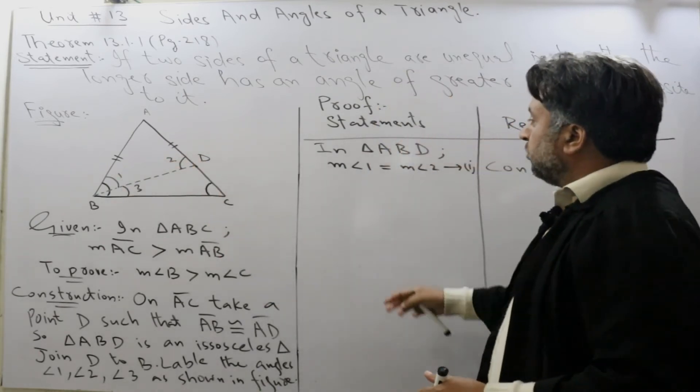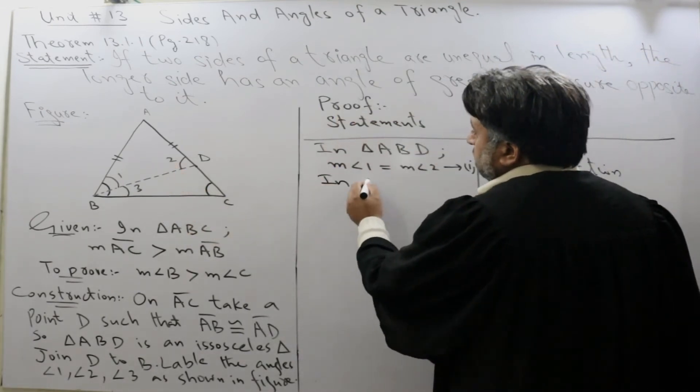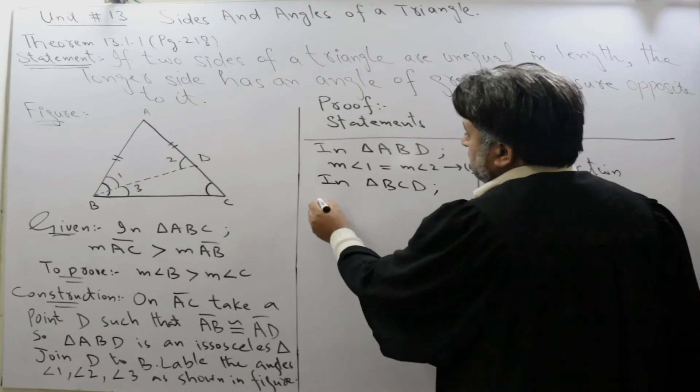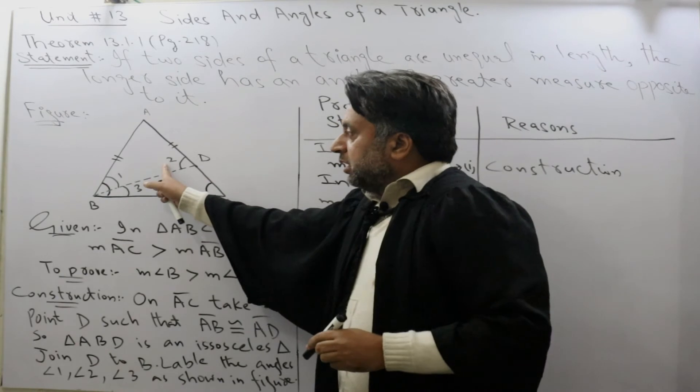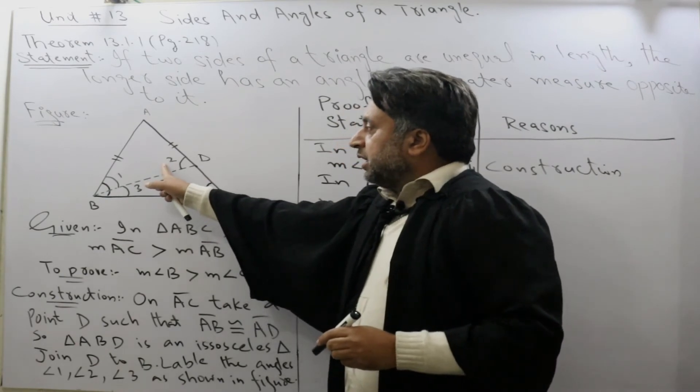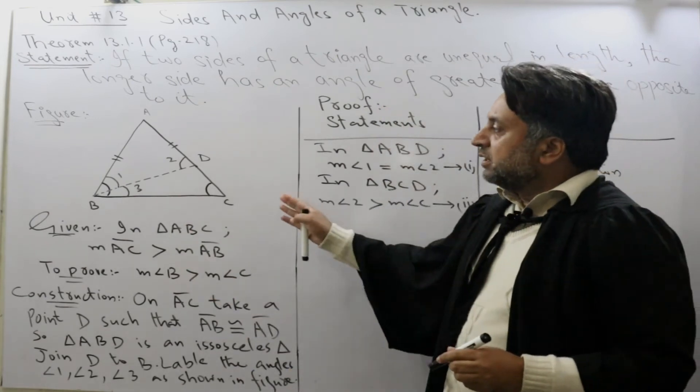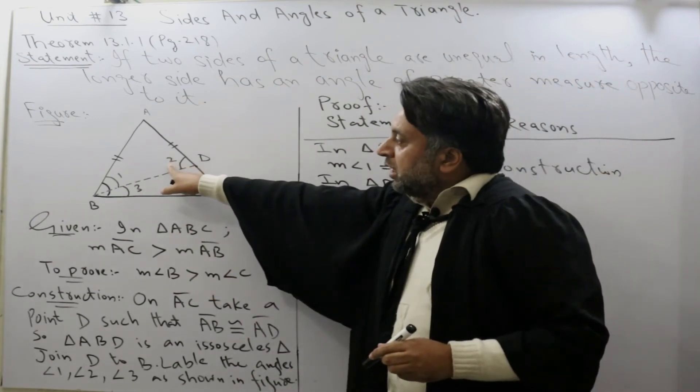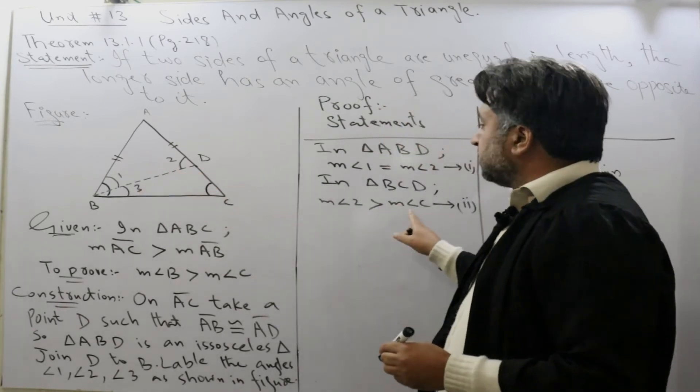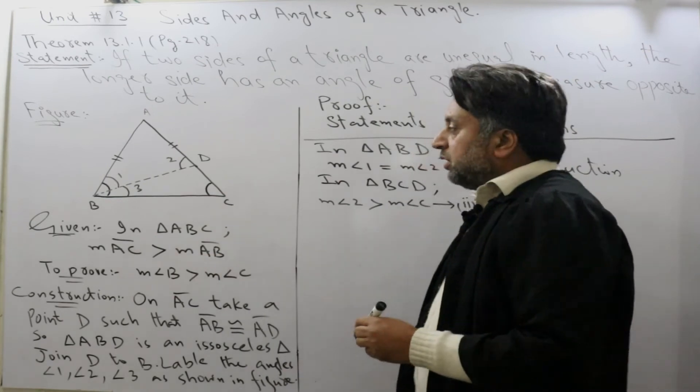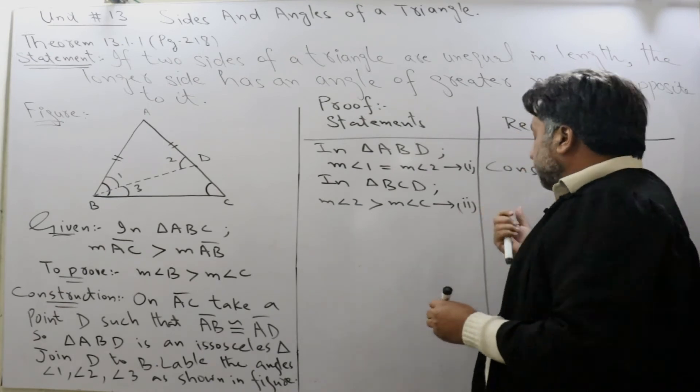Now in triangle BCD, exterior angle 2 is an exterior angle and angle C and angle 3 are non-adjacent interior angles. Remember one thing: exterior angles are always greater than non-adjacent interior angles. It means that angle 2 is greater than angle C. The reason is that exterior angle is greater than non-adjacent opposite interior angle.